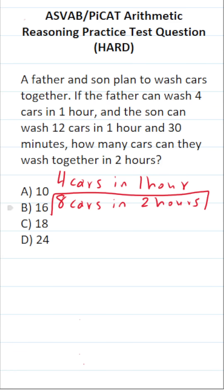So we determine how many cars the father can wash in two hours. Let's do the same thing for the son. According to the problem, the son can wash 12 cars in one hour and 30 minutes. So let's break this down a little bit further.